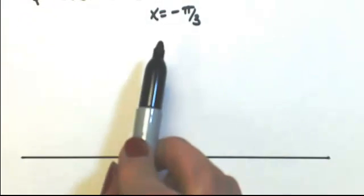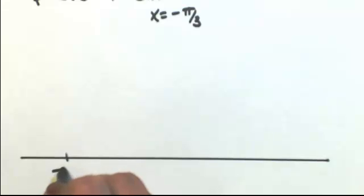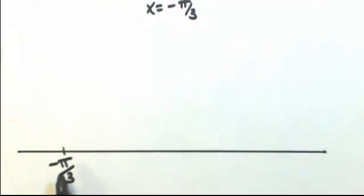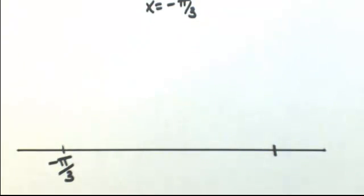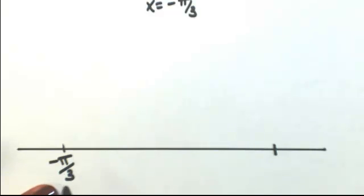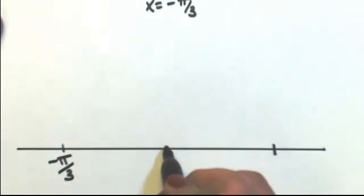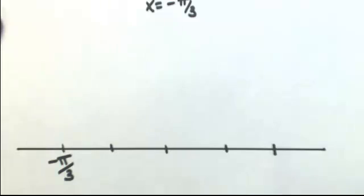It's going to be starting at negative pi over 3, and then it's going to be ending somewhere. We could find what that is by just adding 2 pi over 3. So then we're going to have half, half, and half.